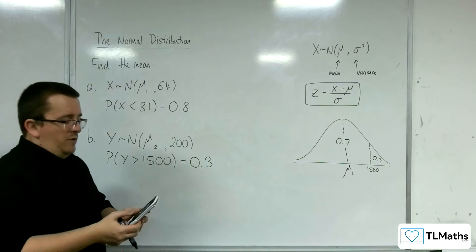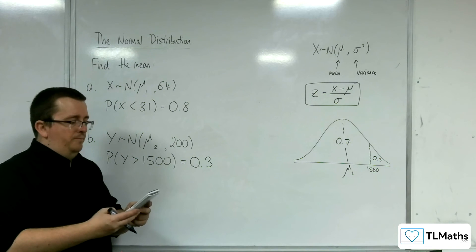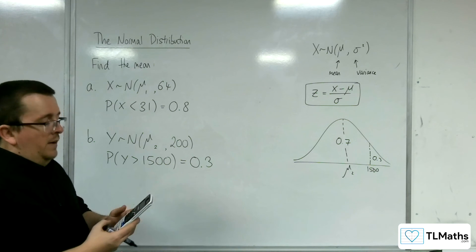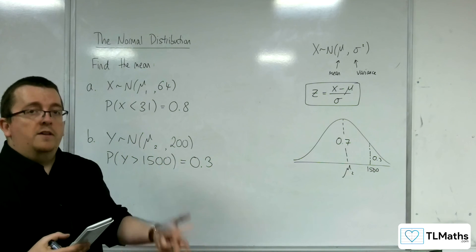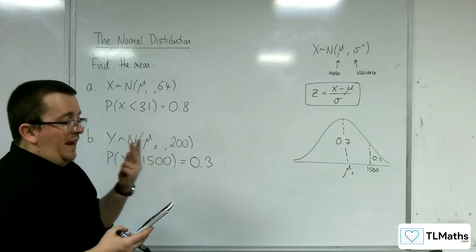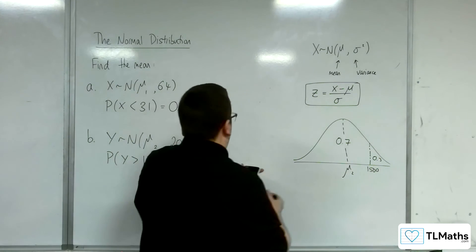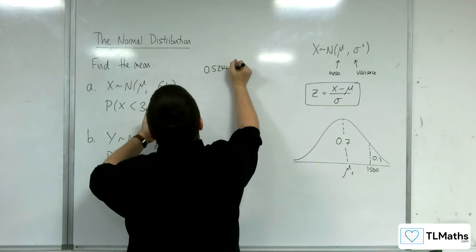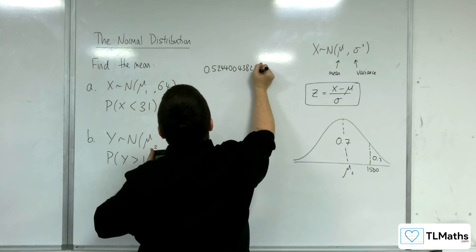I'm going to go on to my calculator again, my inverse norm button. The area this time is 0.7, the standard deviation is 1, the mean is 0. Standard normal, remember. So we should get 0.5244004382.